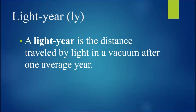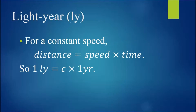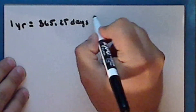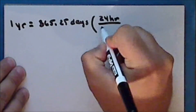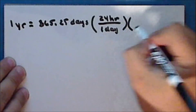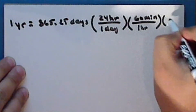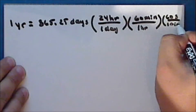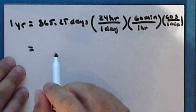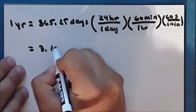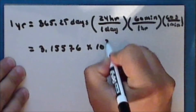A light year is the distance traveled by light in a vacuum after one average year. For a constant speed, the distance traveled is equal to that speed times the time. So one light year is equal to the speed of light in a vacuum times one average year. In one average year there are 365.25 days, in one average day there are 24 hours, in one hour there are 60 minutes, and there are 60 seconds in one minute.